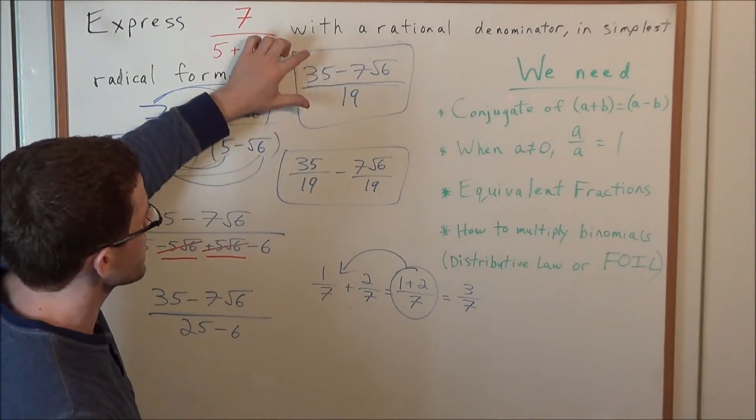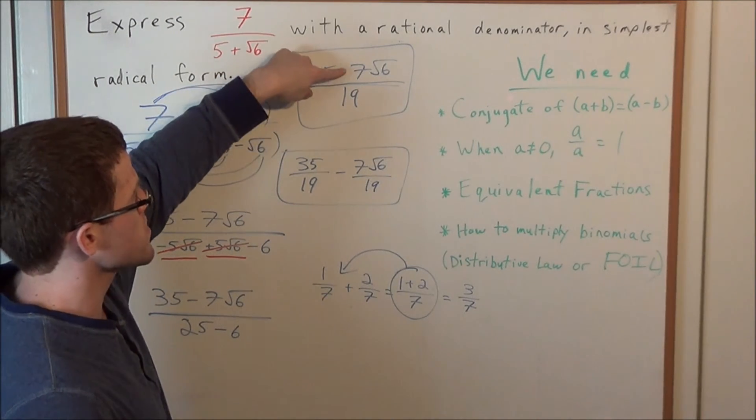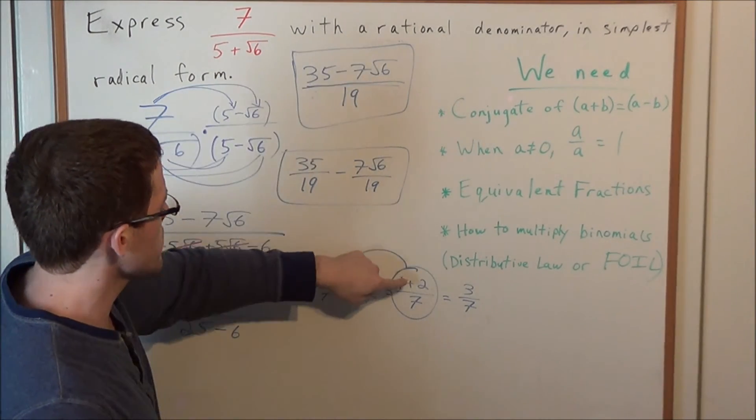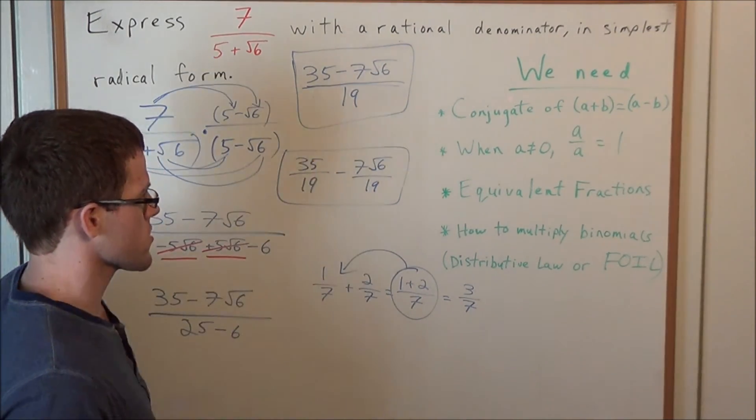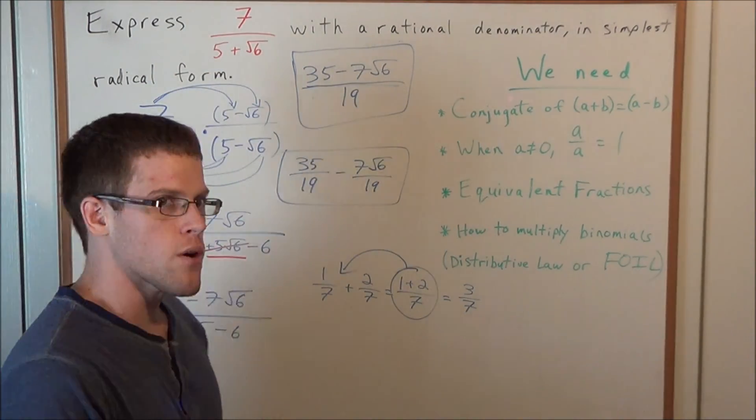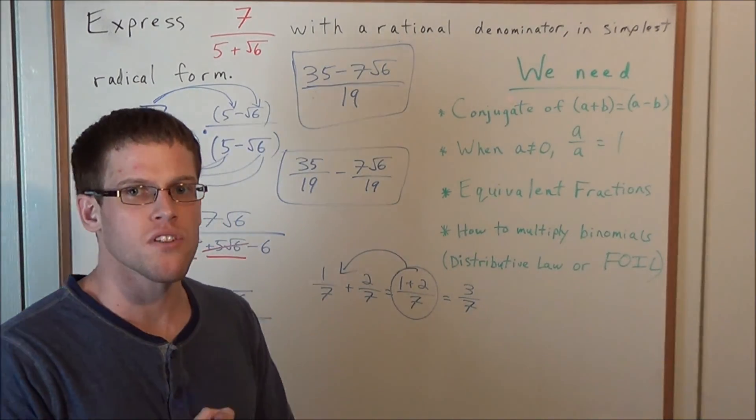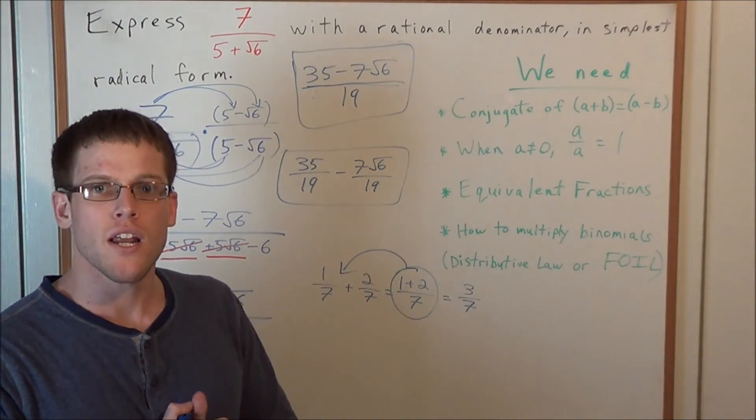And this is really what's being mirrored right here, when we have this 35 minus 7 radical 6 in the numerator, and it splits apart into two fractions, 35 over 19 minus 7 radical 6 over 19. Okay, well that's going to conclude this problem, as well as this video. Thank you all for watching, and I hope that it was helpful.